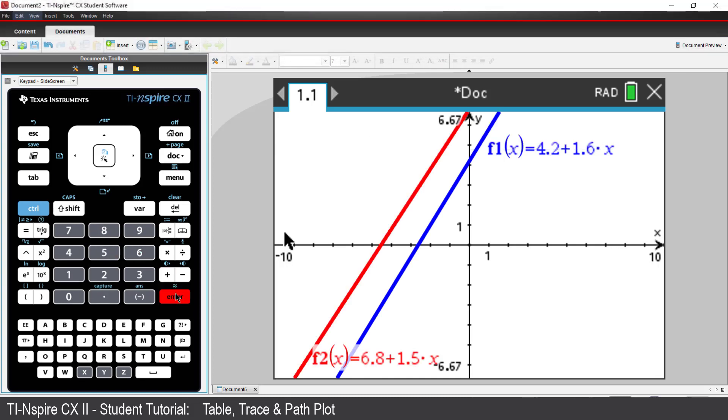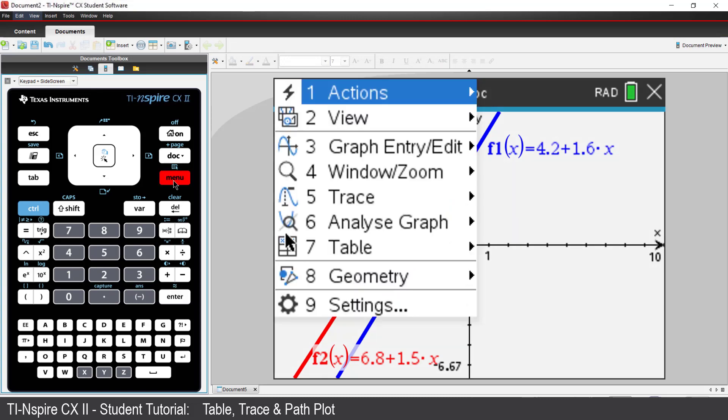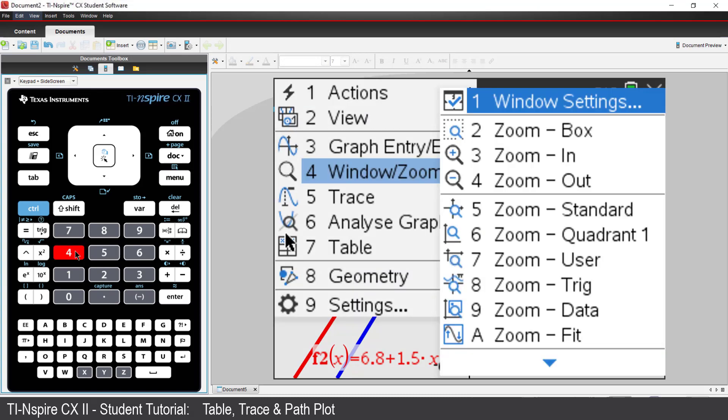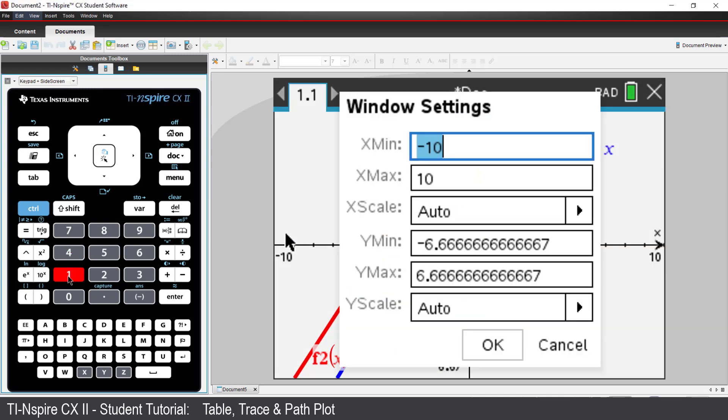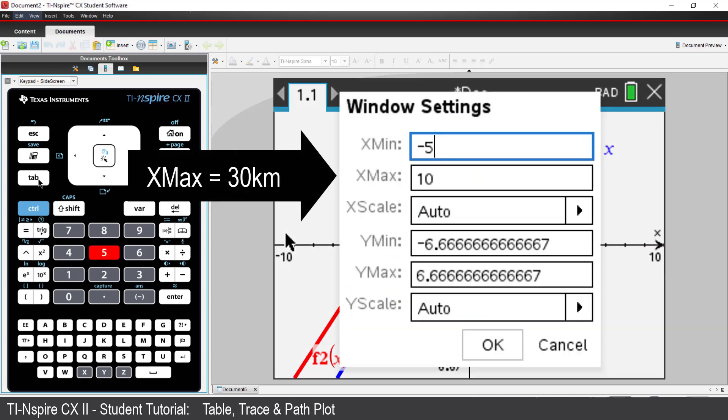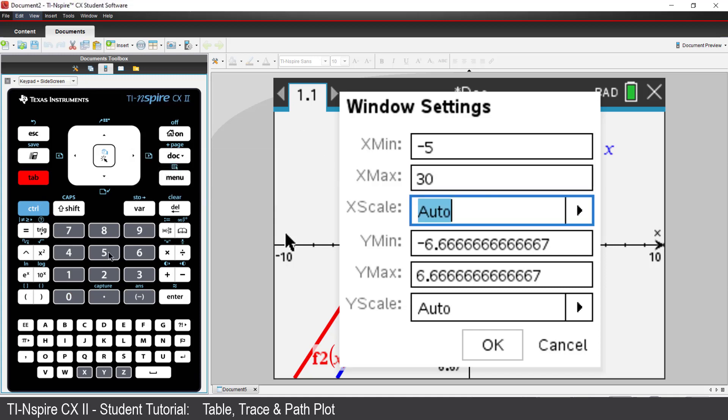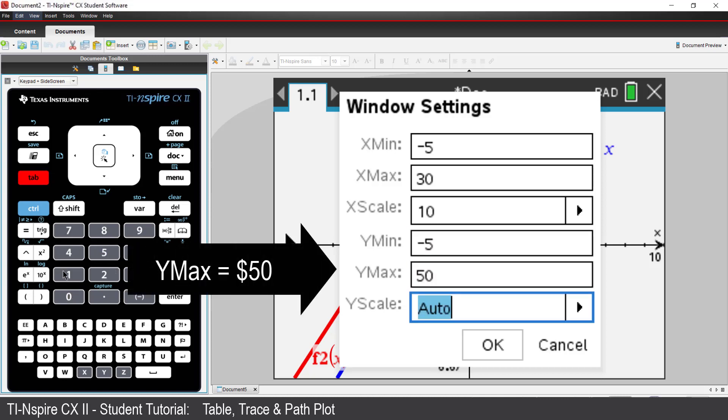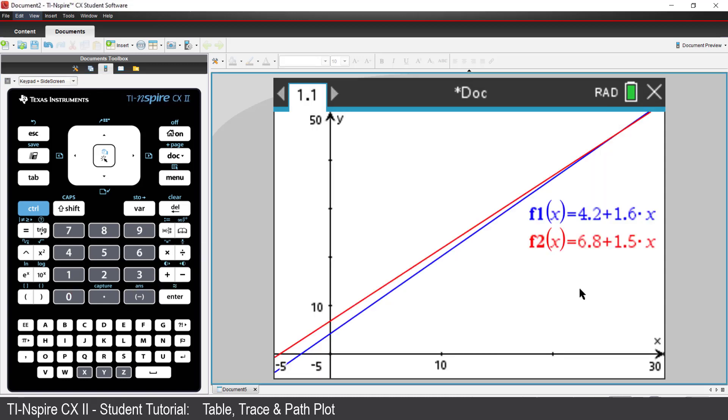If we are interested in distances up to 30 kilometres, then we need to adjust the window settings. For that sort of distance, we'd expect a fare of approximately $50. The graph shows the relationship between price and distance for the two options.